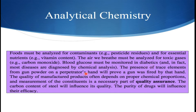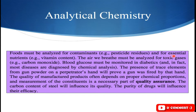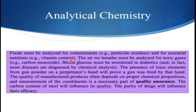Food must be analyzed for contaminants — for example, pesticide residues — and for essential nutrients, for example, vitamin contents. Both these contents can be determined by means of analytical chemistry methods. Likewise, the air we breathe must be analyzed for toxic gases, for example carbon monoxide, and analytical chemistry can provide the methods to determine the amount of these toxic substances.